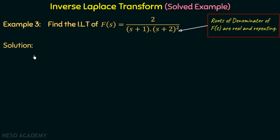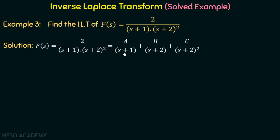Moving on to the solution, we are given f equal to 2 over (s+1)(s+2) whole squared, and by partial fractions it can be written as A over (s+1) plus B over (s+2) plus C over (s+2) whole squared. We can observe that we have three different fractions due to the presence of real and repeating roots. Now we need to find out the values of A, B, and C.